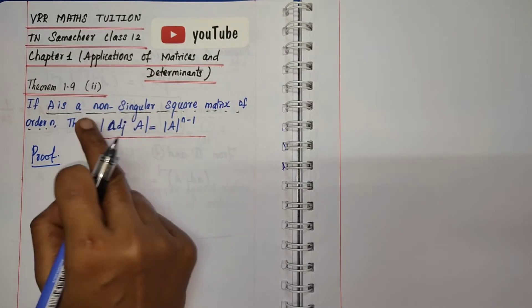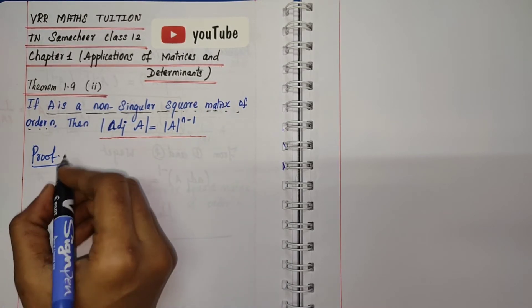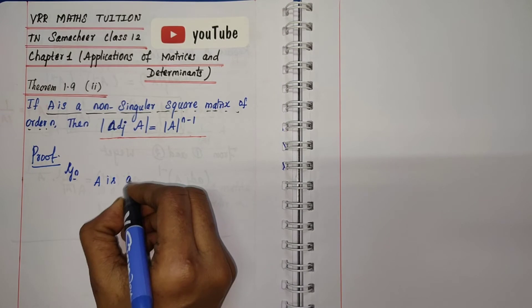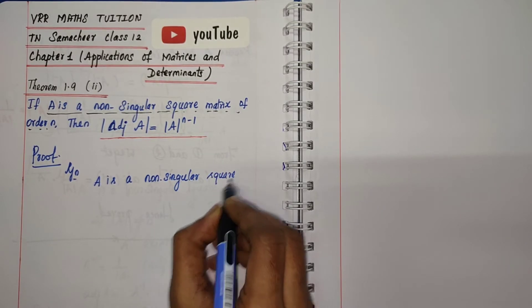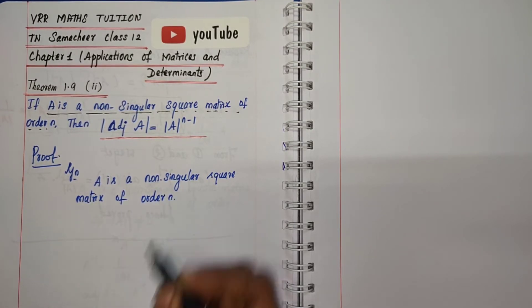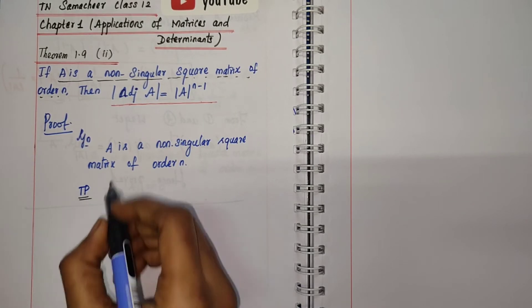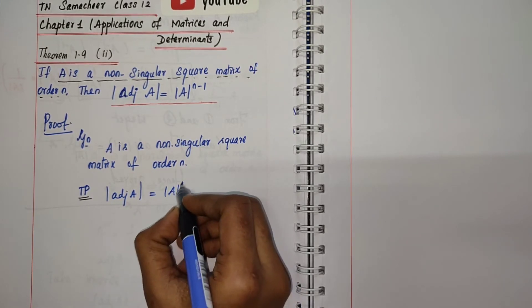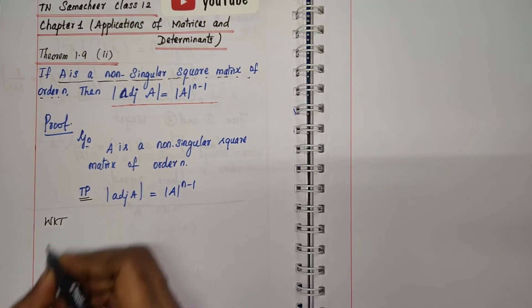Given: A is a non-singular square matrix of order n. To prove: determinant of adjoint A is equal to determinant A whole power n minus 1. Before starting the proof, let's recall a known result.